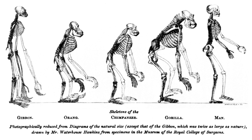Within the primates, all anthropoids are hypothesized to have had a common ancestor all of whose descendants were anthropoids, so they form the clade called Anthropoidea. The prosimians, on the other hand, form a paraphyletic taxon. The name Prosimii is not used in phylogenetic nomenclature, which names only clades. The prosimians are instead divided between the clades Strepsirrhini and Haplorhini, where the latter contains Tarsiiformes and Anthropoidea.